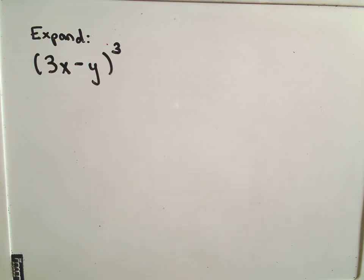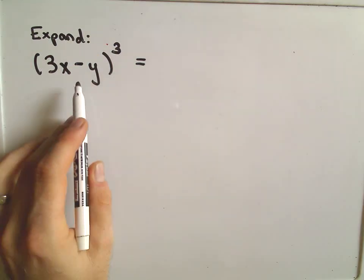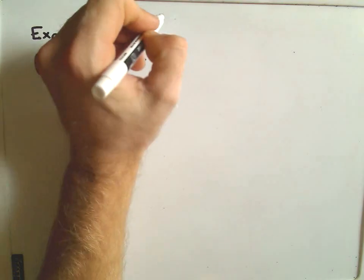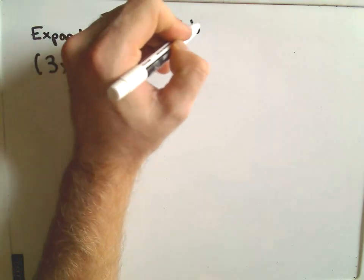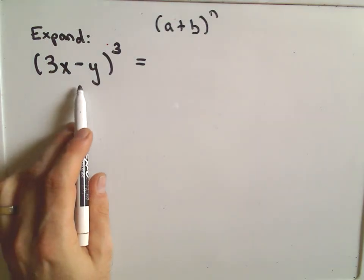Okay, the first thing that's crucial in this one is the binomial theorem has a plus in the middle. Right, it's a plus b to the n. Well, we don't have a plus in the middle, we have a minus, a negative.